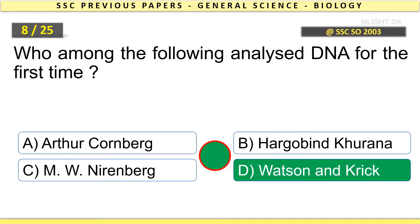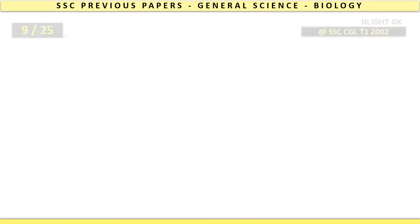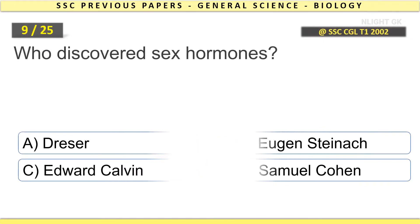Who among the following analyzed DNA for the first time? Watson and Crick. Who discovered sex hormones? Eugen Steinach.